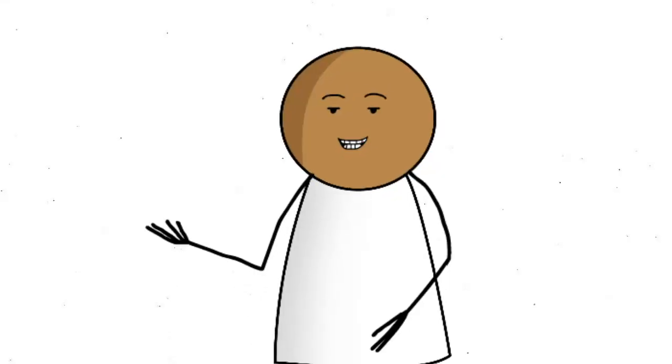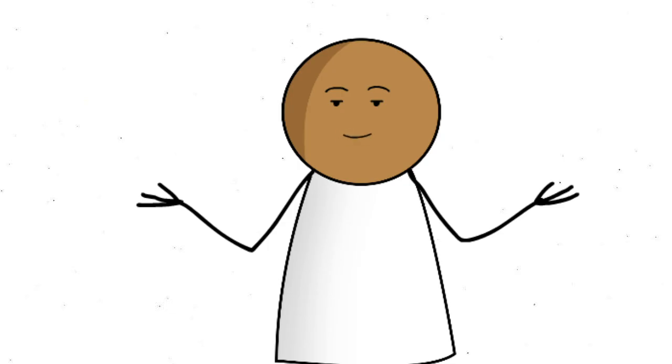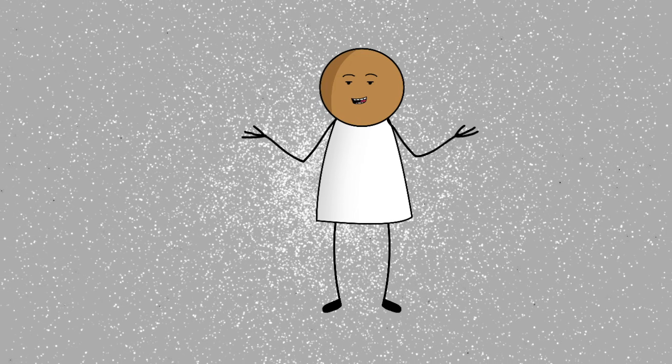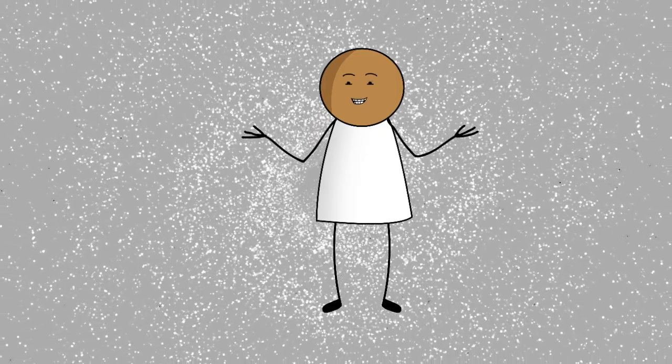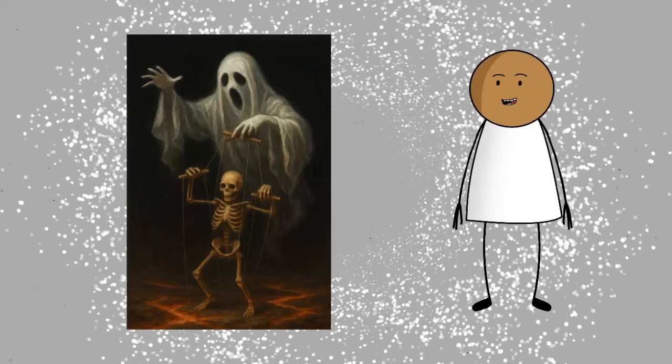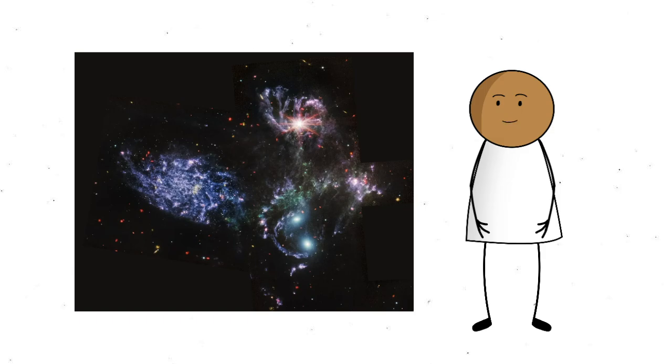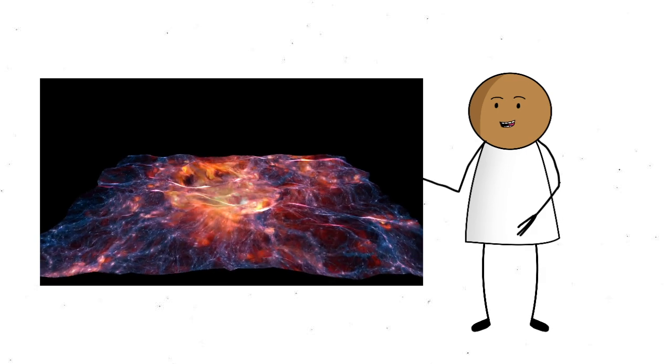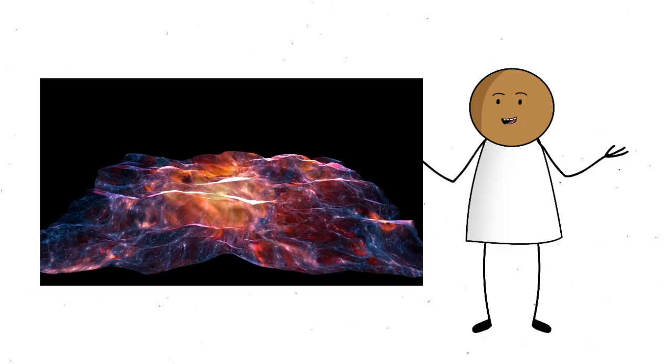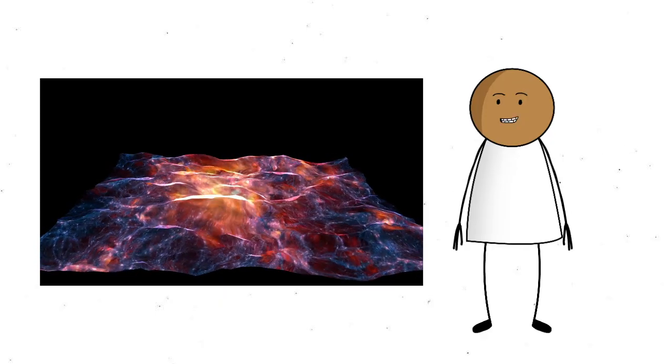Scientists only started mapping the cosmic web in recent decades, using data from massive sky surveys and gravitational simulations. And while we can't see dark matter directly since it doesn't emit light, we know it's there because of the way it tugs on everything else, like a ghost puppeteer. So yes, we live in a galaxy. That galaxy is part of a group. That group is in a cluster. That cluster is one thread of a universe-sized spiderweb. And somewhere out there, billions of other clusters doing the exact same thing. It's enough to make you feel small, but also kind of like a VIP guest at the biggest structure party in existence.